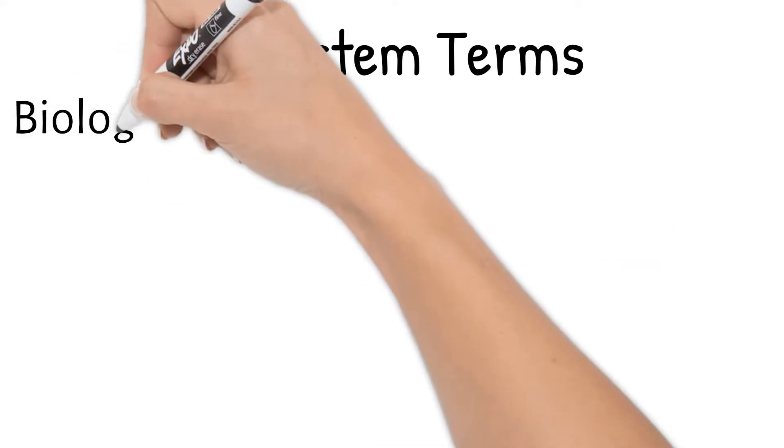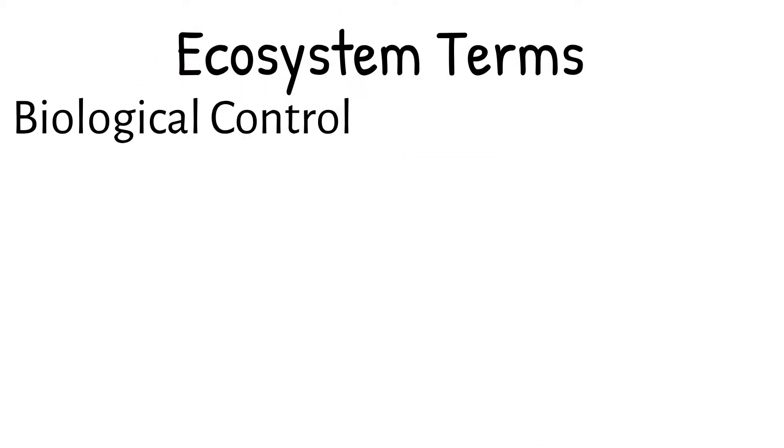A biological control can be used to get rid of pests as well. Remember, bio means living. A biological control is using natural enemies to control pests.